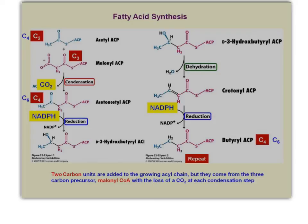With the addition of NADPH, there's a reduction of the double bond producing an alcohol. Then dehydration removes the OH and one H, generating a double bond between those two carbons. Finally, a second reduction with NADPH adds hydrogens across the double bond. This gives a four-carbon acyl-ACP from the original two-carbon ACP. This molecule replaces the acetyl group and the cycle repeats — condensing with another malonyl-ACP — several times until the 16-carbon palmitic acid is produced, at which point thioesterase cleaves off the palmitate.